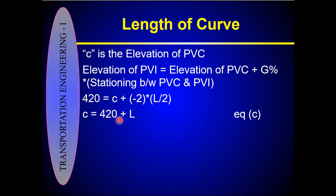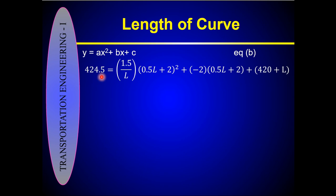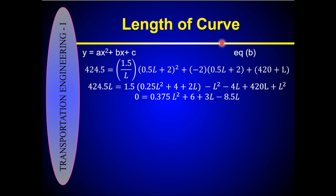The value of x is the location where the street crosses, which is L/2 + 2 stations from the PVC. Substituting all values into the parabolic equation gives: 424.5 × L = 1.5 × L + (−2) × (0.5L + 2) × L + 420 × L. Solve this equation for L.